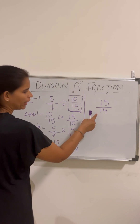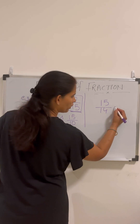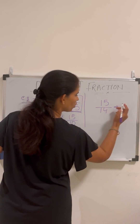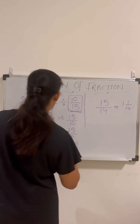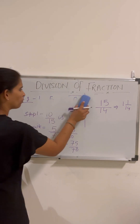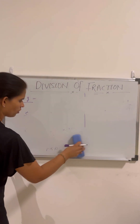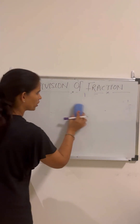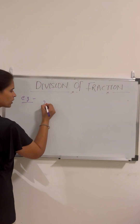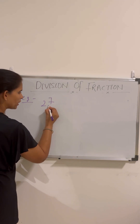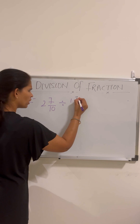Keep in mind we can also change it into a mixed fraction. So 15/14 as a mixed fraction is 1 and 1/14. Both answers are correct. Now let's take one more example — how to solve division when the fractions are mixed fractions.